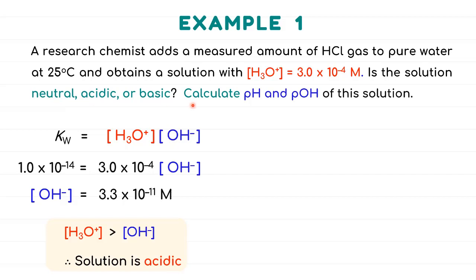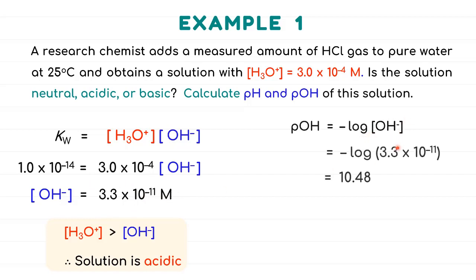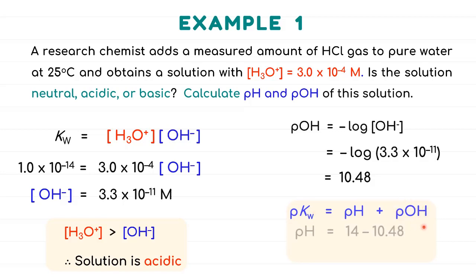Moving on to finding pH and pOH. Since we have both concentrations of H3O+ and OH−, we can find either value. Starting with pOH, substitute into the formula of negative log [OH−], giving pOH = 10.48. To find pH, we use pKw = pH + pOH, where pKw = 14 and pOH = 10.48, giving pH = 3.52.